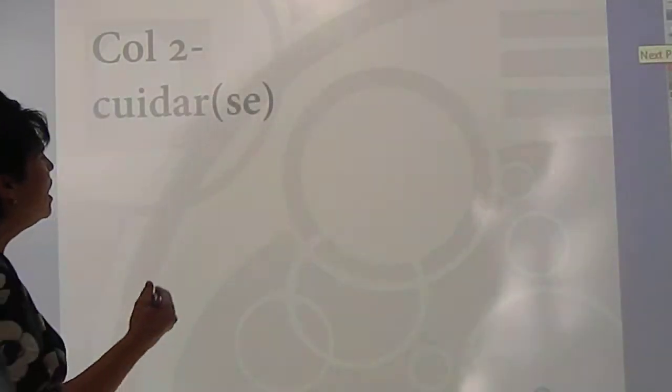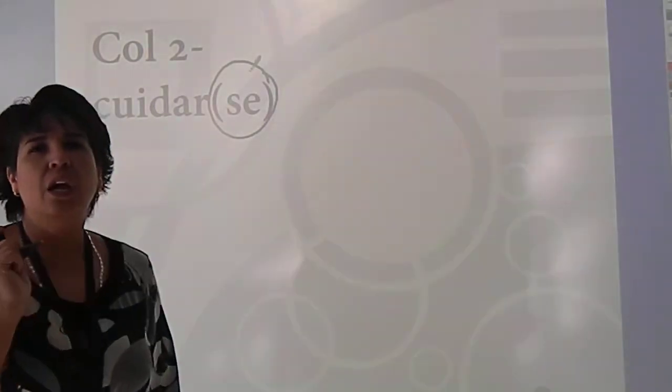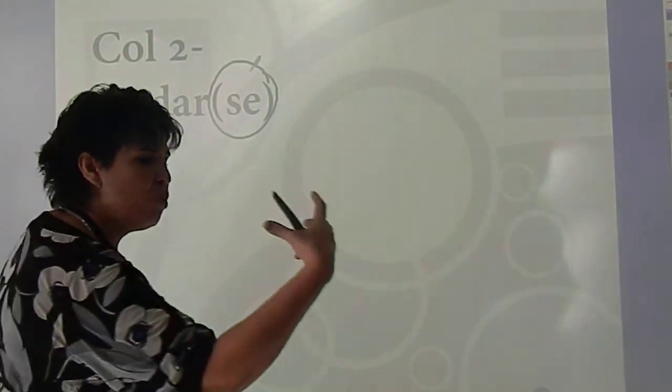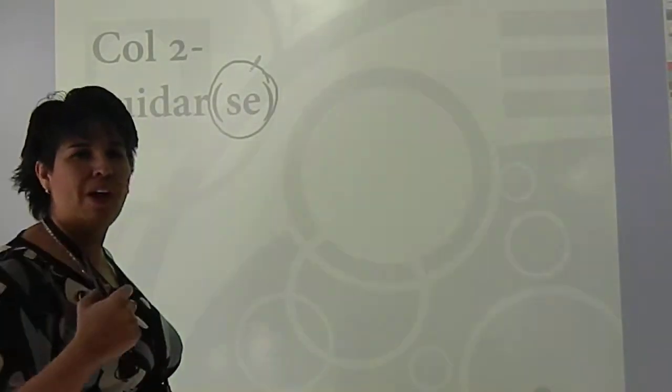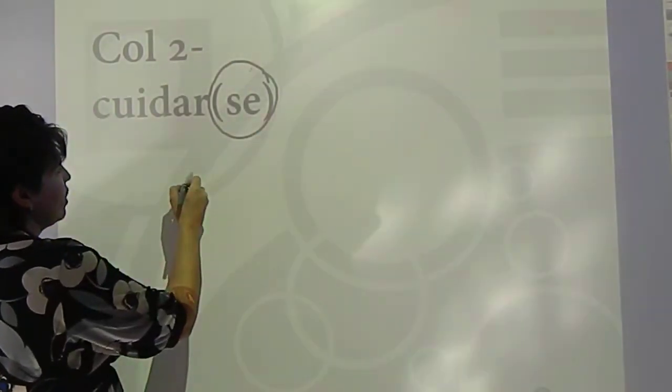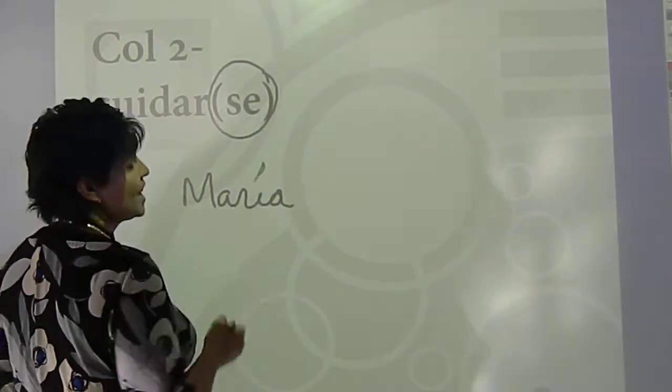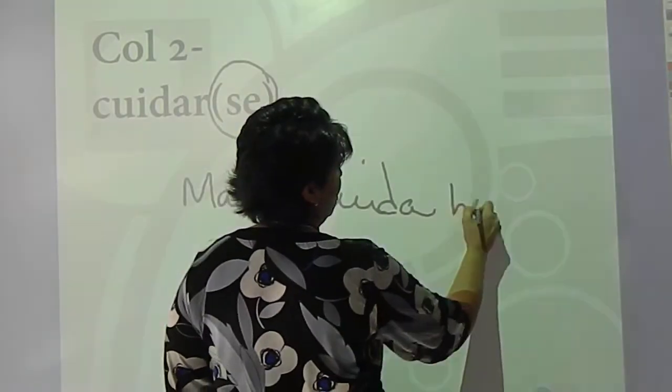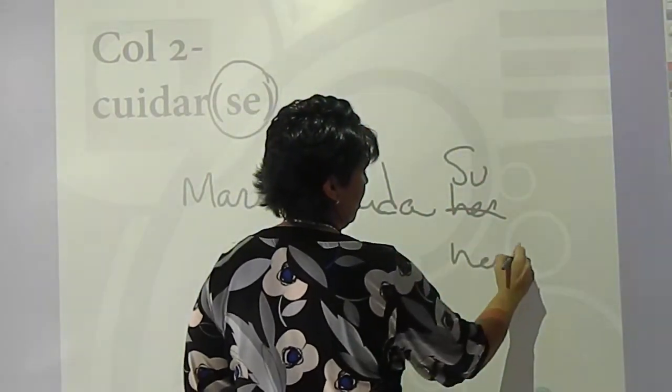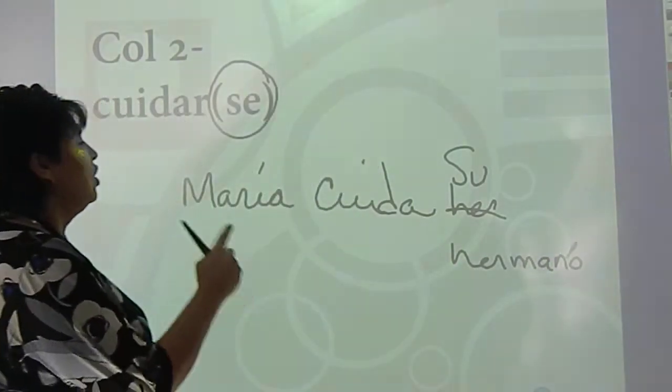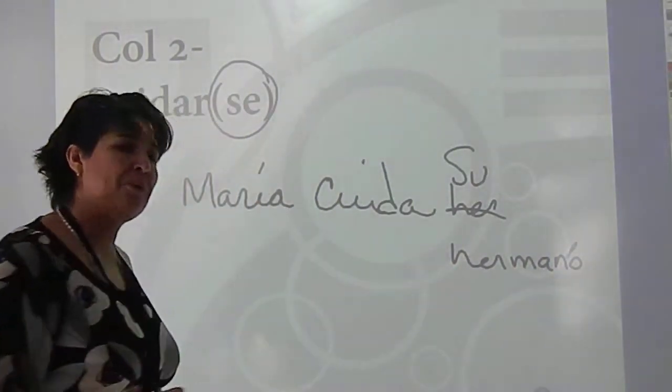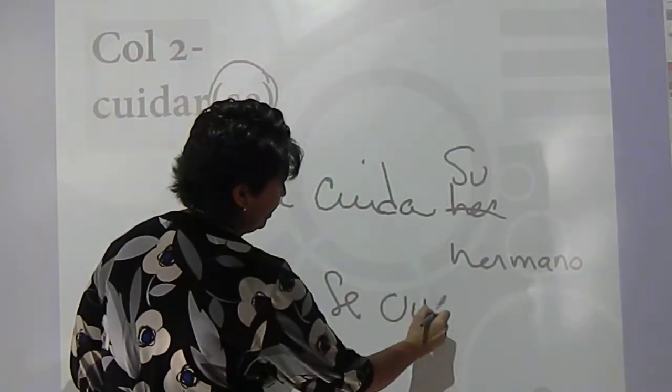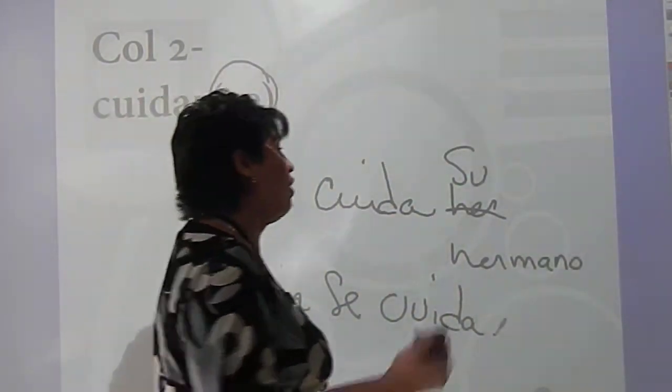Cuidarse. Notice that the verb has the reflexive in parentheses. And the reason for that is because if I am taking care of someone else, then this is not a reflexive verb. For example, Maria takes care of, cuida, su hermano. So if she is taking care of someone else, then it's not reflexive.